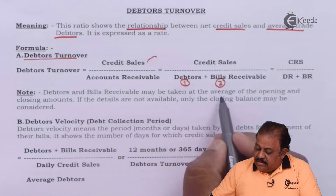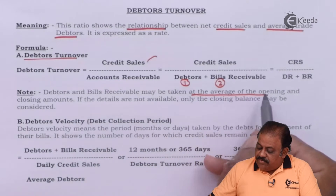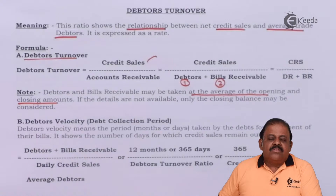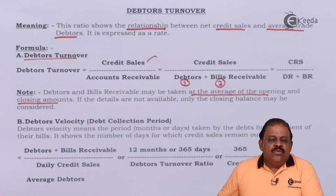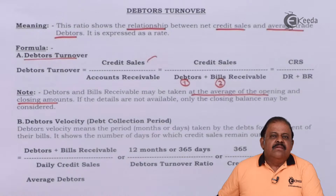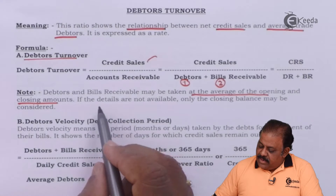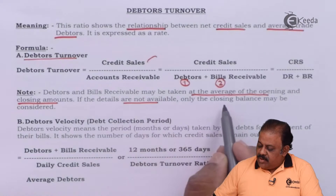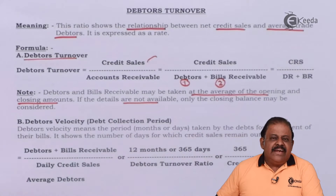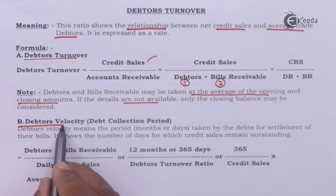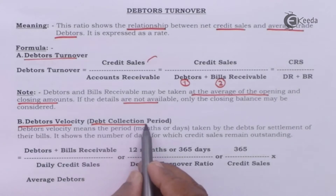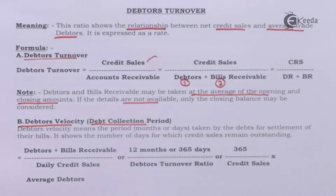Debtors and bills receivables may be taken at the average of opening and closing amounts, that is opening debtors plus closing bills receivables divided by 2. If the details are not available, then closing debtors and closing bills receivables may be taken. Debtors velocity can be calculated — that is, the debt collection period, or on average how much time is taken by debtors to make payment.